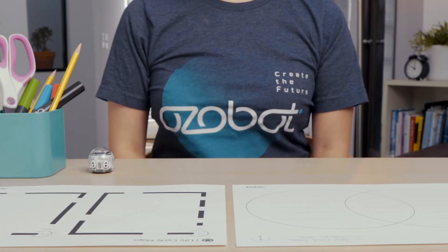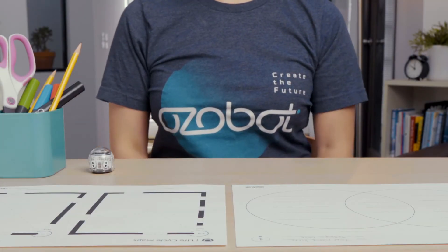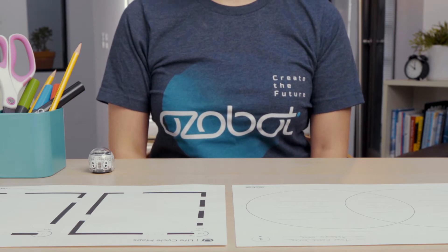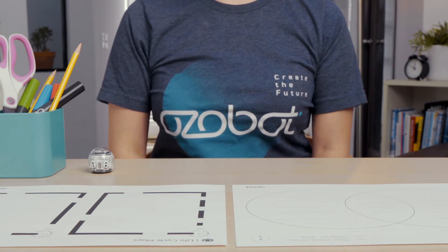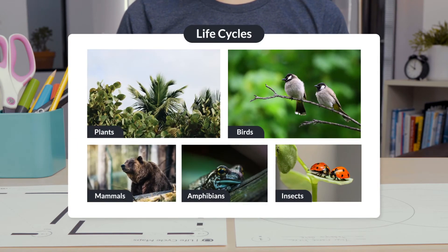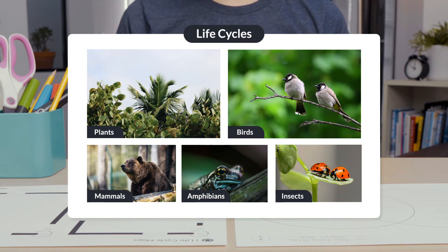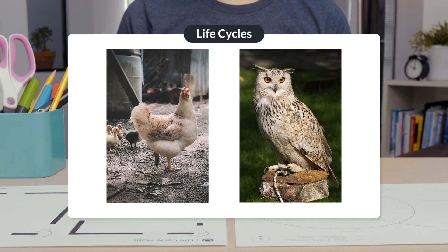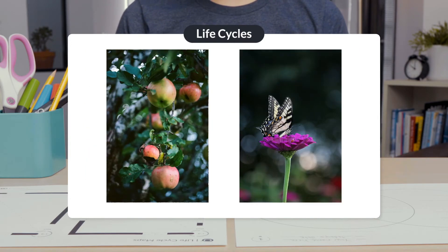To begin, you need to decide which two life cycles you are going to show and tell others about. You may choose plants, birds, mammals, amphibians, or insects. You may choose two organisms from the same group, like a chicken and an owl, or two organisms from different groups, like an apple tree and a butterfly.